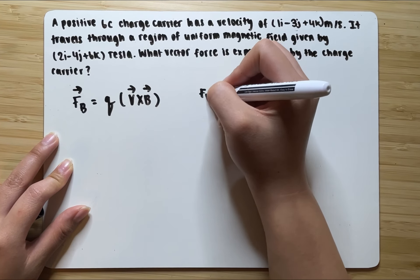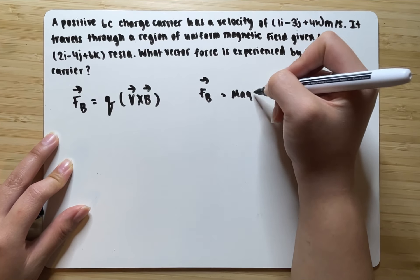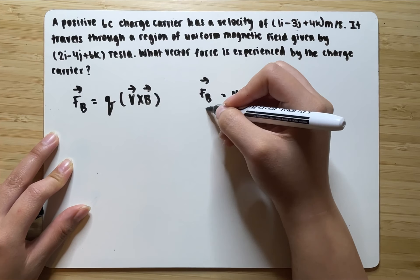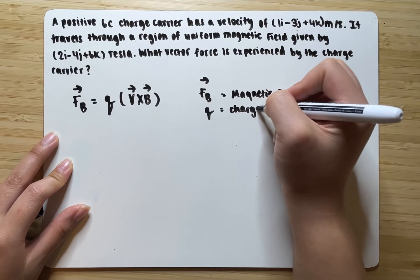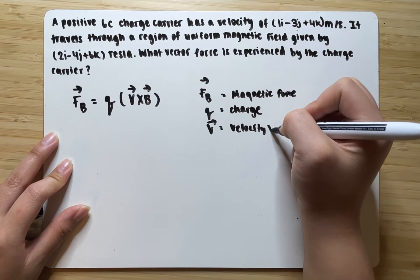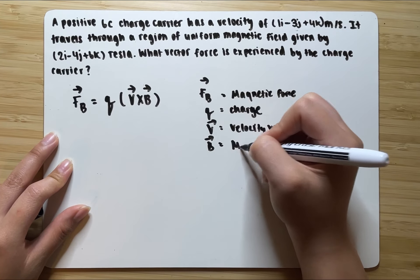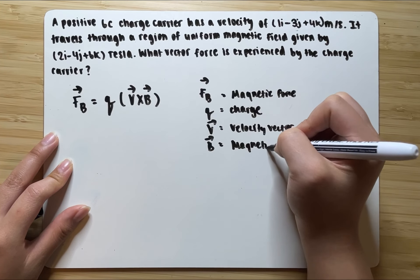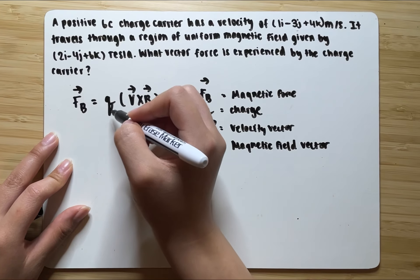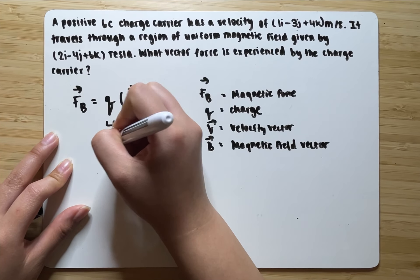So this is going to be the magnetic force. Q is going to be the charge, V is going to be the velocity vector, and B is going to be the magnetic field vector. We know here that it says a positive 6 Coulomb charge carrier, meaning that the charge is going to be a positive 6.